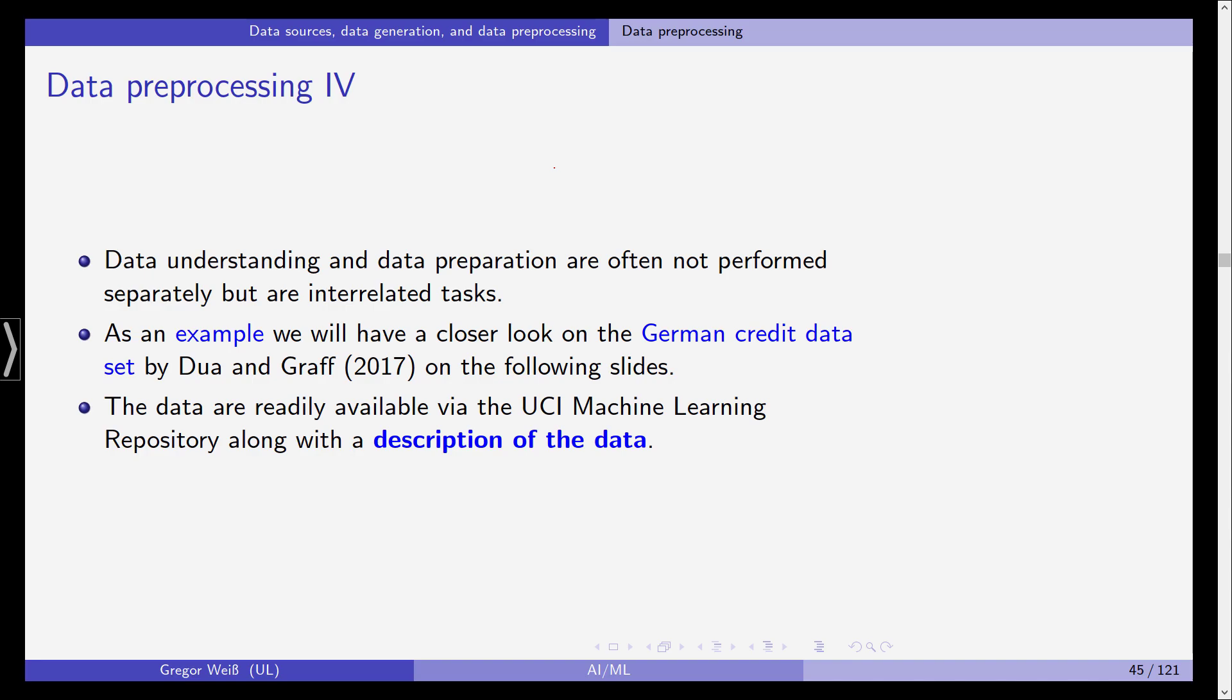Now, data understanding and data preparation are often not performed separately but are interrelated. As an example, we will later have a closer look at the German credit dataset by Dua and Graf. The data are also available from the UCI machine learning repository along with a very detailed description of the data. So I encourage you to have a look at the data in the example at UCI, and we'll talk about this credit dataset and loan dataset here in these videos next.